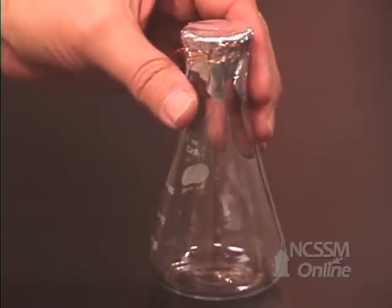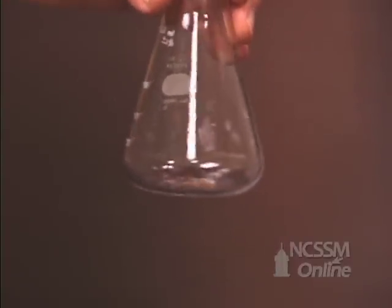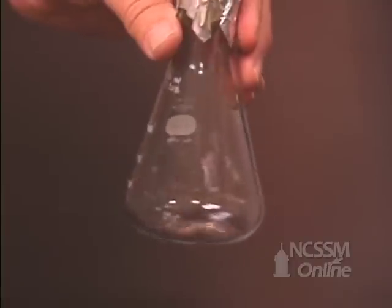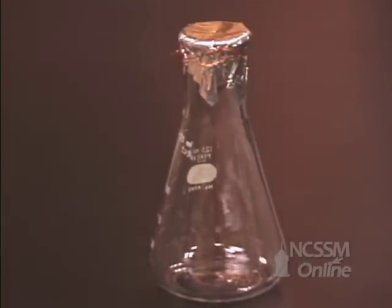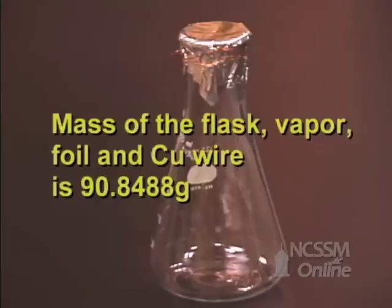When the flask is cooled to room temperature, the liquid that has condensed was the amount of vapor that would fill the flask at the temperature of the boiling water bath. We will now mass the flask, the liquid, the aluminum foil, and the copper wire.